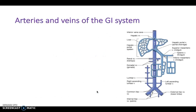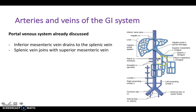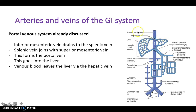The veins of the GI system are less complicated. The inferior mesenteric vein drains the hindgut and drains into the splenic vein. The splenic vein then joins the superior mesenteric vein, which has drained the midgut. Together they form the hepatic portal vein, which goes into the liver. Within the hepatic portal system, venous blood enters the liver sinusoids, exits via the hepatic vein, drains into the inferior vena cava, and returns to the right atrium of the heart.